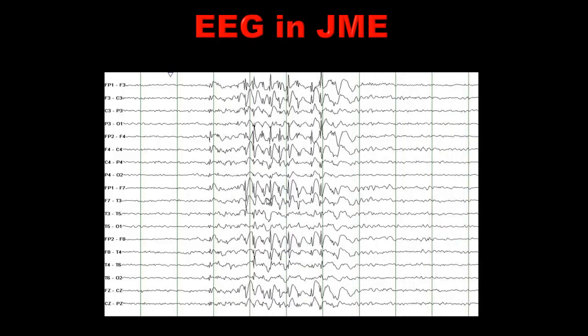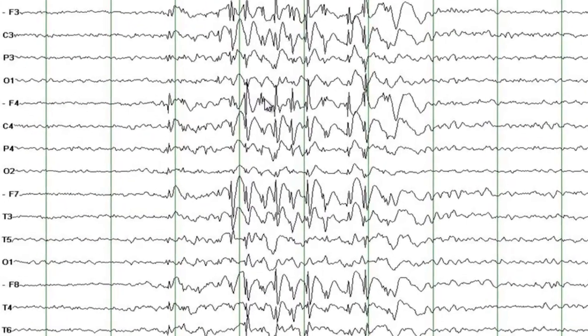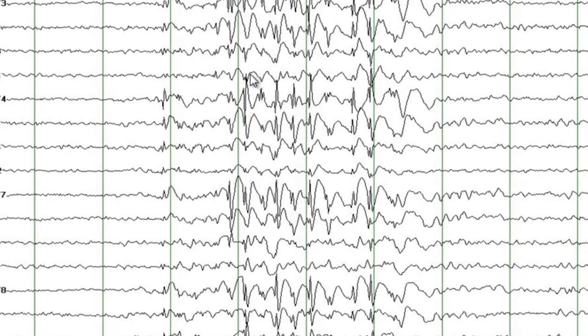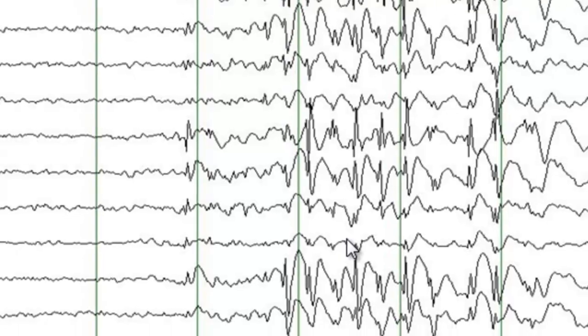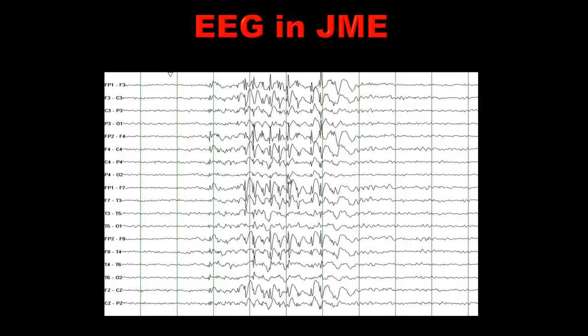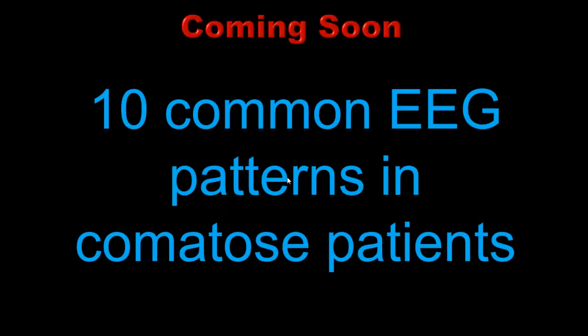The pattern here is generalized spike and wave and poly spike and wave discharges. If you compare this with the earlier 3 per second spike and wave slide, this is more irregular — it is 4 to 6 per second, and you can count multiple spikes in a single discharge — those are poly spikes. This pattern is often seen in association with juvenile myoclonic epilepsy. That's pretty much it for today. I will discuss other common EEG patterns in comatose patients in a future presentation. Good luck with your exams. Bye for now.